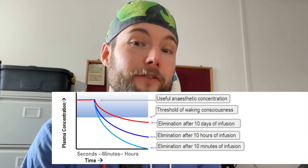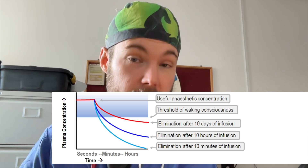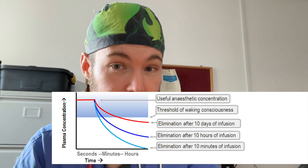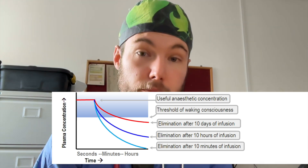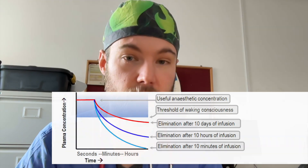Drugs with a very low volume of distribution tend to wash out much more quickly. This is what we call context-sensitive half-time: drugs that are very fat-soluble tend to have a larger context-sensitive half-time, meaning they take much longer to wear off if you've been giving them for a long period of time. Remifentanil, with its small volume of distribution, wears off very quickly. But propofol and fentanyl take a very long time to wear off because they dissolve into the fat and take a long time to leach back out — you end up with an auto-transfusion from the fat stores back into the plasma until those fat deposits are used up.